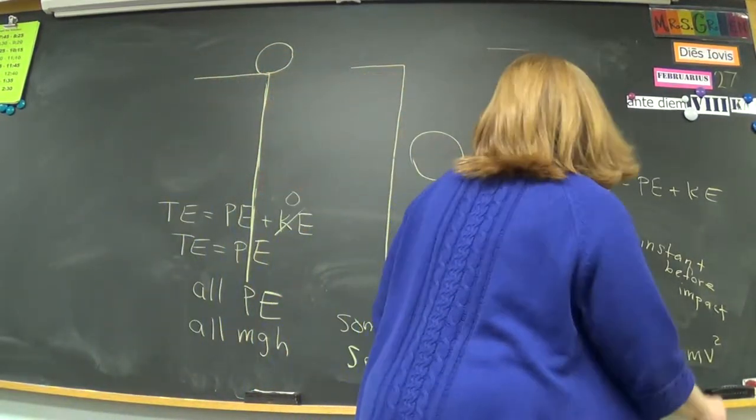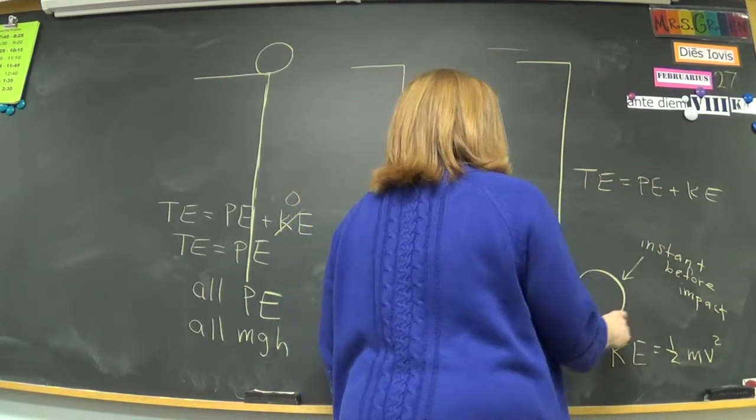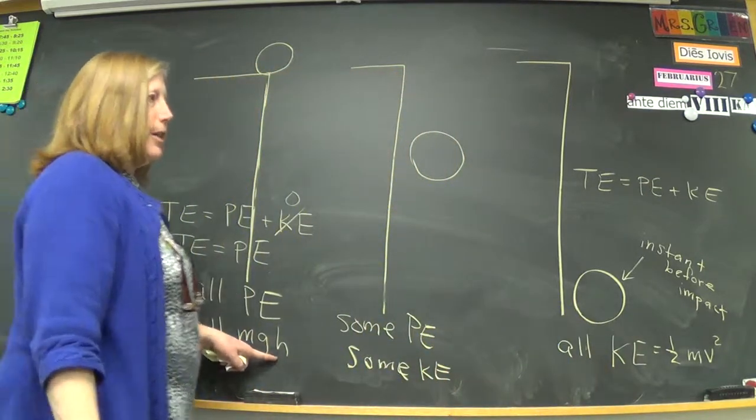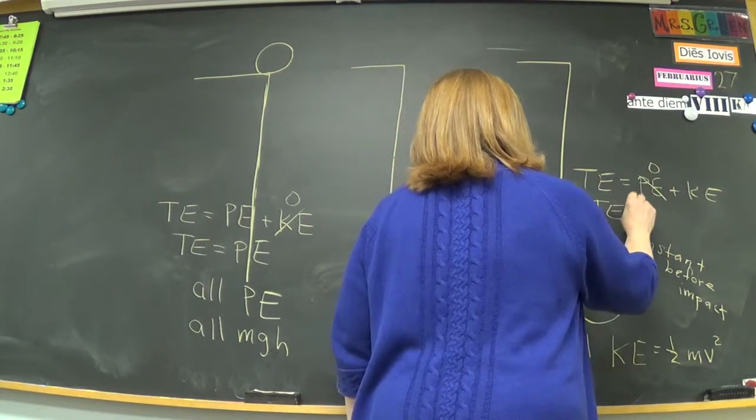PE. Potential energy is gone. It's all kinetic energy because it's right before it hits. There is no more height. So PE is all gone. So this zeroes out. So here, TE is all kinetic.